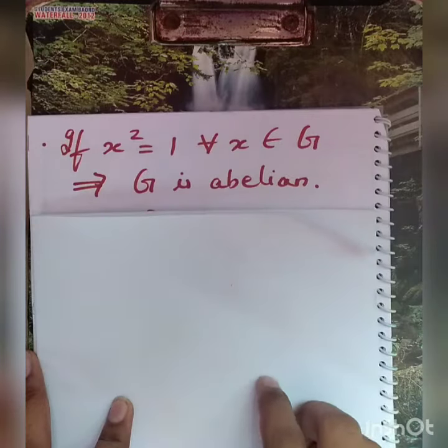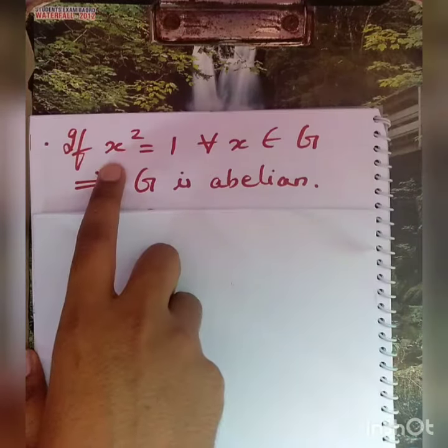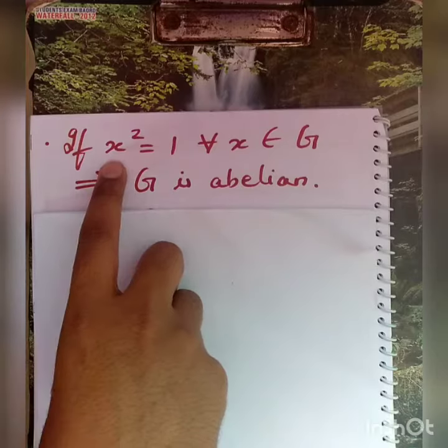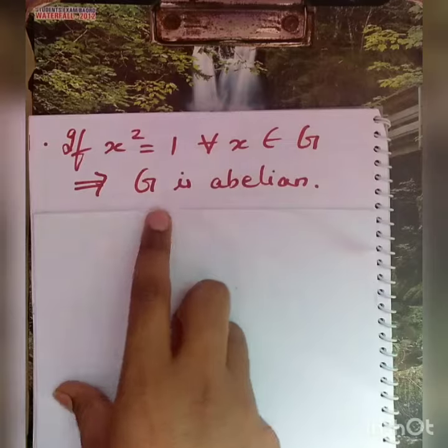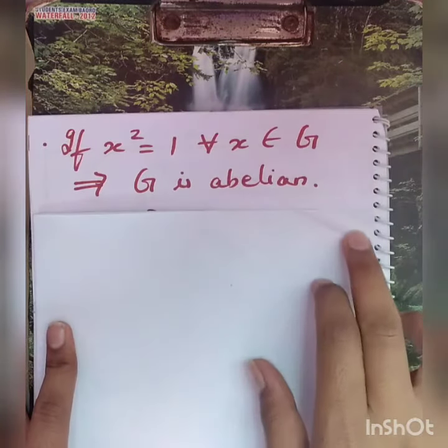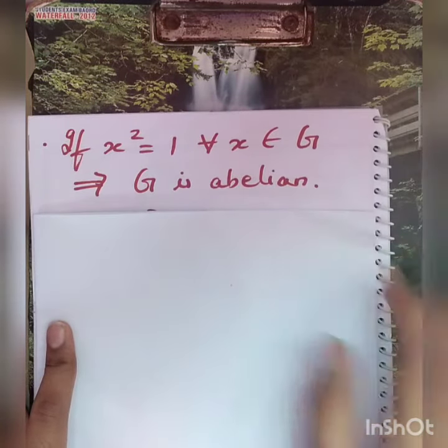In this video we prove if the square of every element in the group is identity, then the group is abelian. This is one of the standard problems and is asked in many competitive exams.